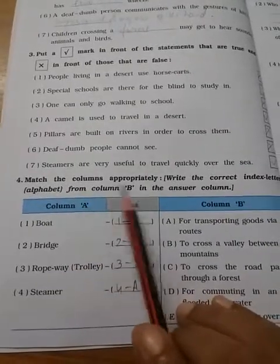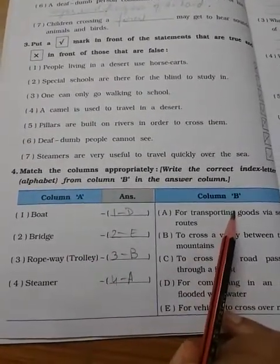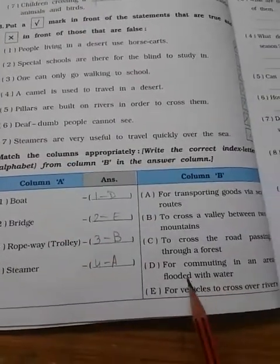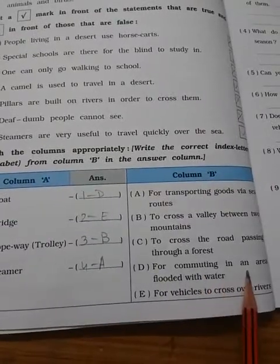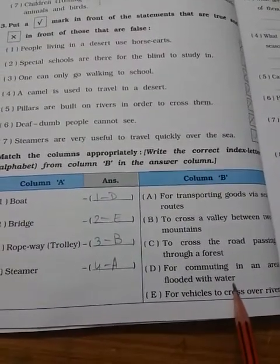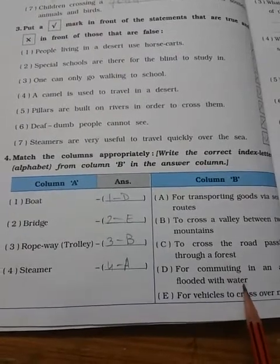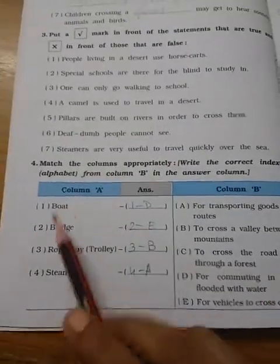Now children, matching is there from A column to the B column. First, boat. Where you use the boat? The answer is D: for commuting in the area of flood or water. Water is everywhere, so we can use the boat.